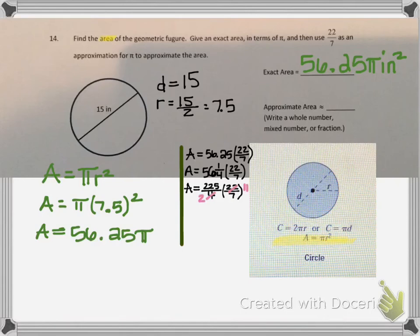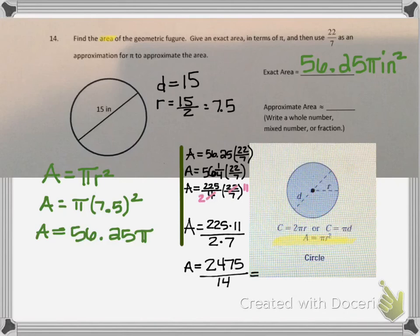22 and 4 share a common factor of 2. So to get my final answer, I do 225 times 11 over 2 times 7, which gives me 2475 over 14, or the mixed number 176 and 11 fourteenths.